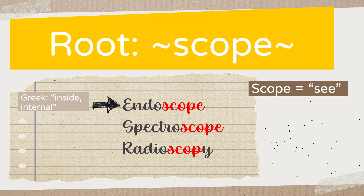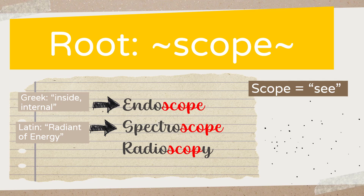The next one is 'spectroscope.' The word 'spectro' is a root coming from a Latin origin, and it means a radiance of energy — basically when you have light and shine it into a certain place, it scatters into different colors. So with a spectroscope, when you see through it, you can see one light being divided into multiple different rays of light — and that's why it's called a spectroscope.